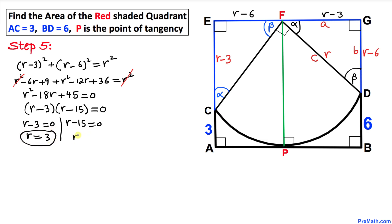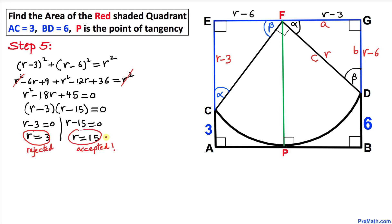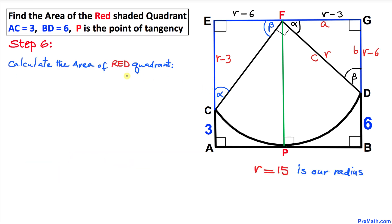Let's check r = 3 first: plugging into r − 6 gives 3 − 6 = −3, and since a distance cannot be negative, r = 3 is rejected. Therefore we accept r = 15 as our only valid solution. Our radius r turns out to be positive 15.